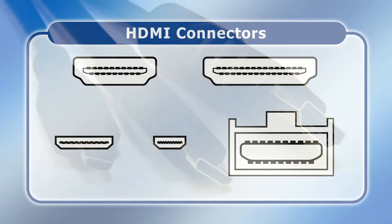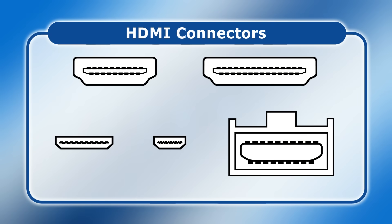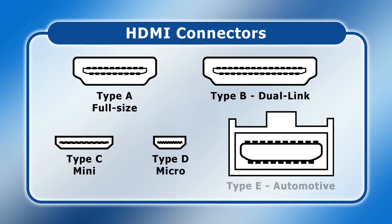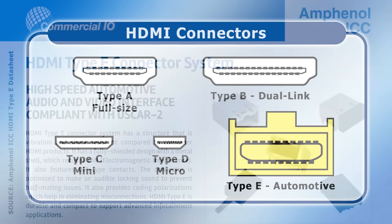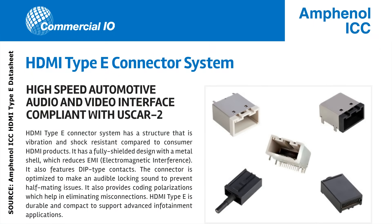In total, five different HDMI connectors have been specified, bearing the letters A to E, also known as Standard or Full Size, Dual Link, Mini, Micro, and the Automotive Connection System. Of these, only Standard, Mini, and Micro connectors are found on computers and end-user displays. The Dual Link connector was specified back in 2002 but has never been used in any products, while the Automotive connector is based on Type A but is fully shielded and incorporates an anti-shock locking mechanism.